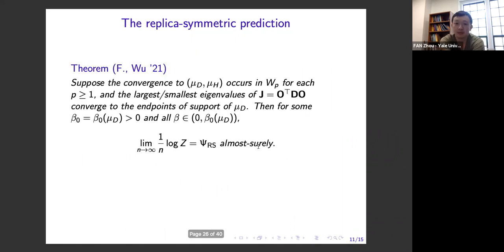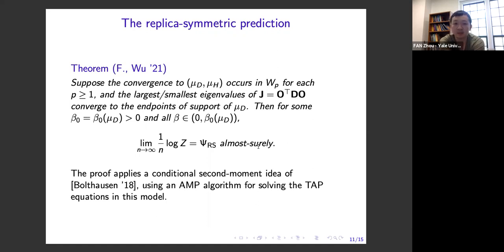The conjecture is that up to a certain temperature threshold (analogous to the AT threshold in SK), the free energy converges to this replica symmetric formula. Some version of this formula was first stated by Marinari, Parisi, and Ritort in 1994, and the specific version here appears in the adaptive TAP paper of Opper and Winther in 2001, derived using the replica method. We are able to prove the validity of this prediction in the high-temperature regime.